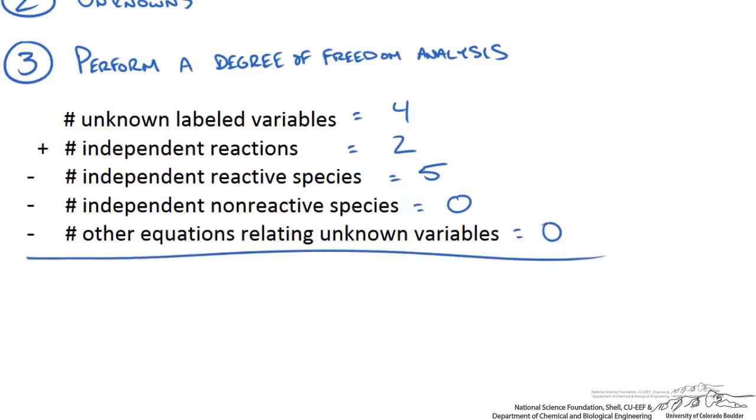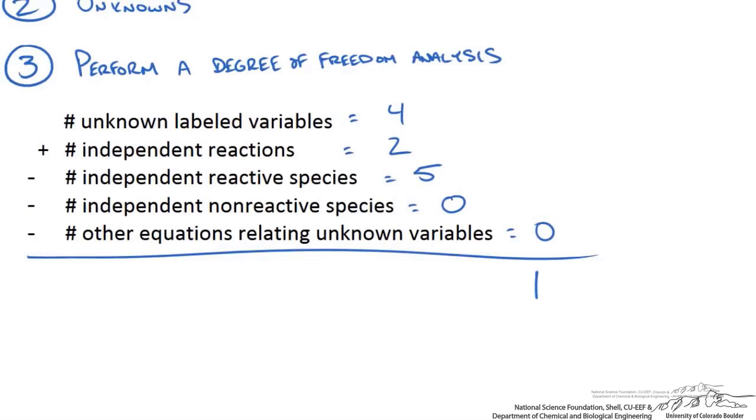This gives us a degree of freedom of one, which means that given the information we have, we cannot solve this problem. Fortunately, we are looking for a ratio of the outlet products to the inlet reactants—selectivity—so we could choose a basis for this problem to use.